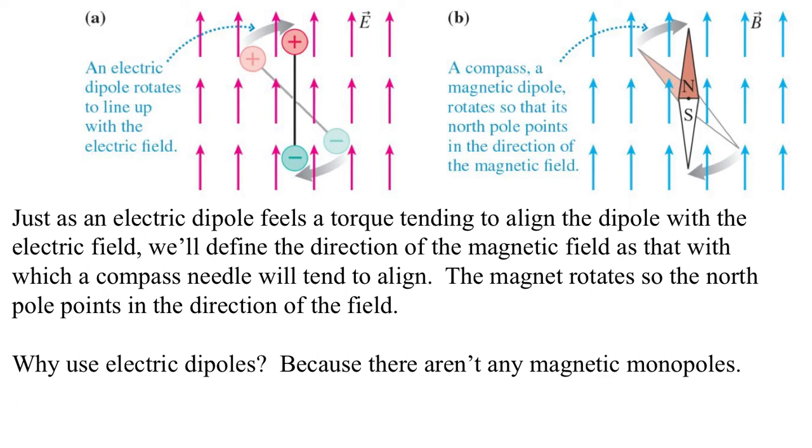Why do we use electric dipoles? Because there aren't any magnetic monopoles, so we can't reason from what happens to charges because there's no equivalent magnetic charge. Instead, we say that the magnetic field is the thing that the compass will line up with, with the north pointing in the direction that the field is pointing.